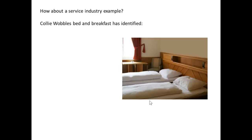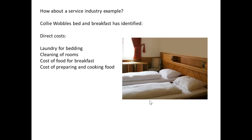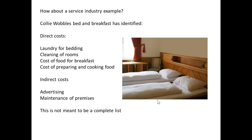You can apply the same idea to a service industry. Collie Wobbles has a bed and breakfast. Her direct costs include laundry for bedding, cleaning of rooms, cost of food for the breakfasts, and cost of preparing and cooking that food. Her indirect costs include advertising and the maintenance of the premises. That's not a complete list, but it's a good idea of what we mean by direct and indirect costs.